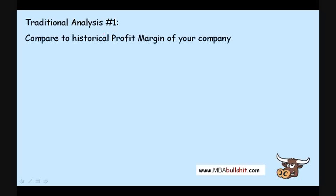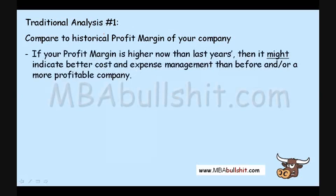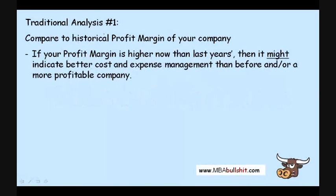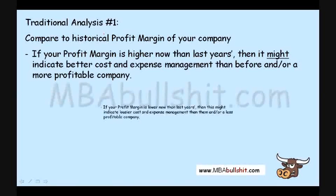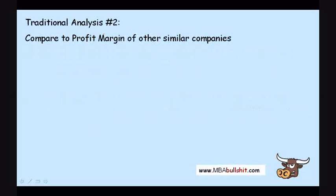There are also traditional ways of analyzing financial ratios. The first is to compare your most recent profit margin to last year's — your historical profit margin. If your profit margin is higher now than last year's, it might indicate better cost and expense management than before, and may also indicate a more profitable company. If your profit margin is lower than last year's, this might indicate worse cost and expense management. The word 'indicate' is used because it's not 100% certain — it's just an indicator.